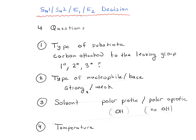So in the previous video, we went through the SN1, SN2, E1, E2 decision and introduced the concept of these four questions. The first one we talked about was the type of substrate.